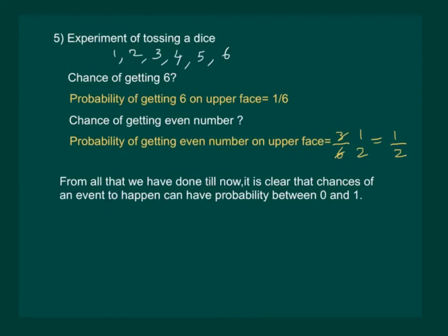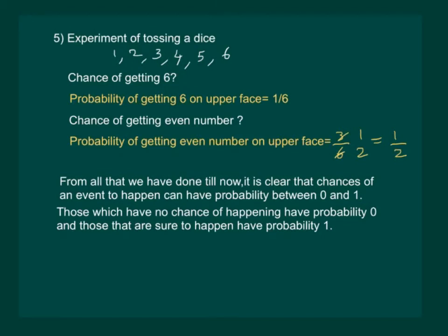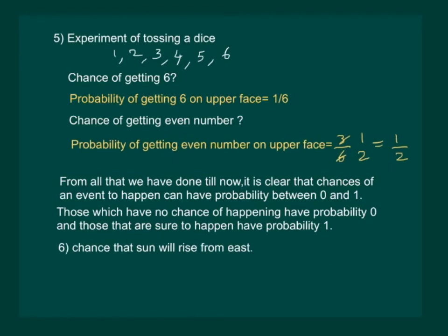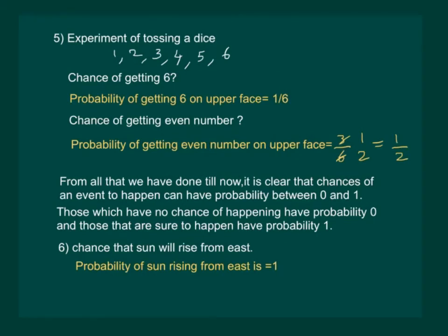From all that we have done till now, it is clear that the chance of an event happening can have probabilities between 0 and 1. Those which have no chance of happening have probability 0, and those that are sure to happen have probability 1. For example, the chance that the sun will rise from the east is the same as saying the probability of the sun rising from the east is equal to 1. Hence, we understand that some situations in life are certain to happen, some are impossible, and some may or may not happen — and those we measure in terms of probability.